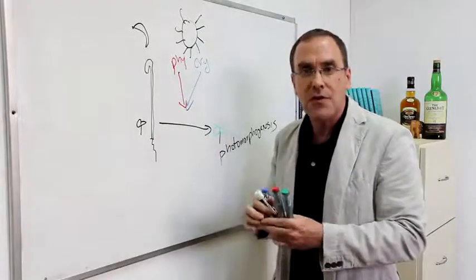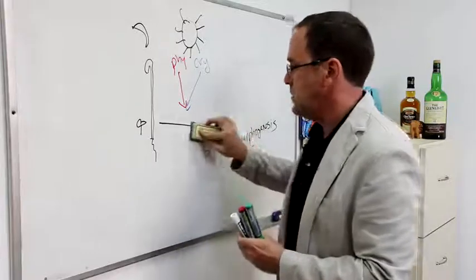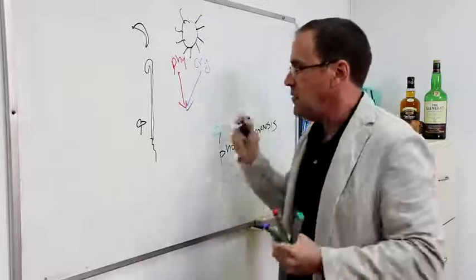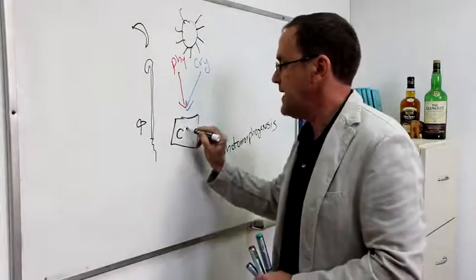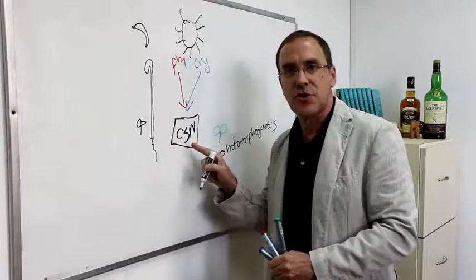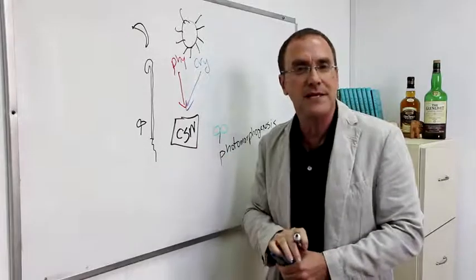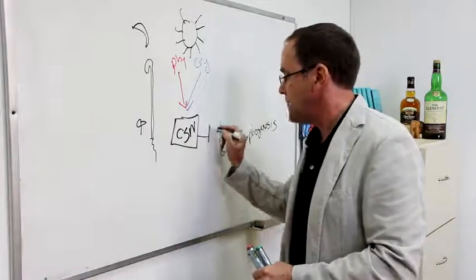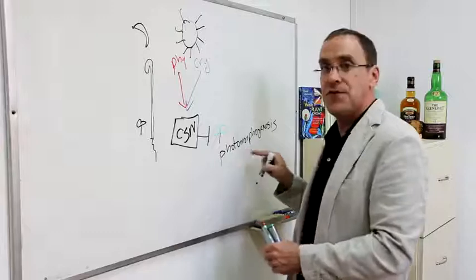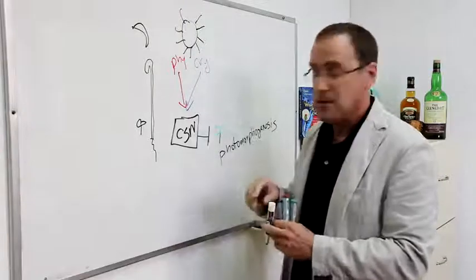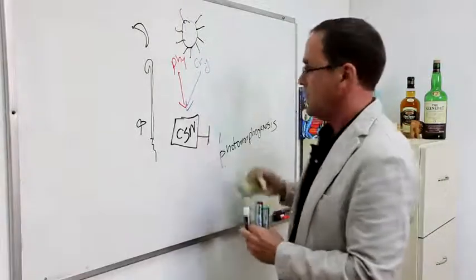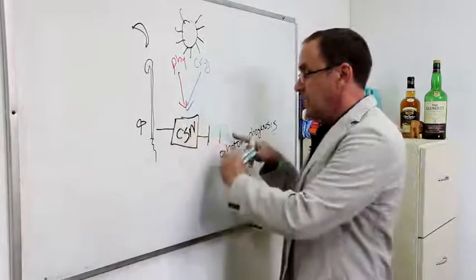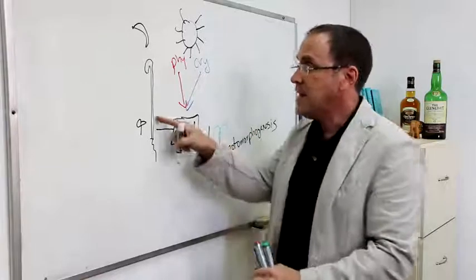And what we discovered was that it was a group of eight proteins that I'll call the CSN. The COP9 signalosome is a group of eight proteins and what did we discover? That the role of the CSN is to repress, this is a symbol meaning repress, it represses photomorphogenesis in the dark. So under normal dark conditions, the COP9 signalosome inhibits this and we get this type of growing.